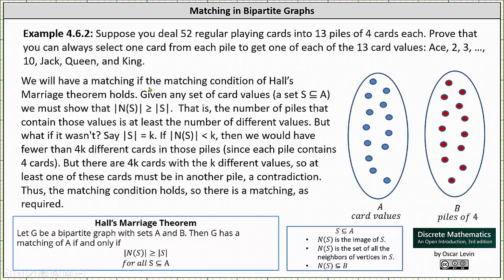We will have a matching if the matching condition of Hall's Marriage Theorem holds. Given any set of card values, a set S which is a subset of A, we must show that the cardinality of N(S) is greater than or equal to the cardinality of S. That is, the number of piles that contain those values is at least the number of different values.